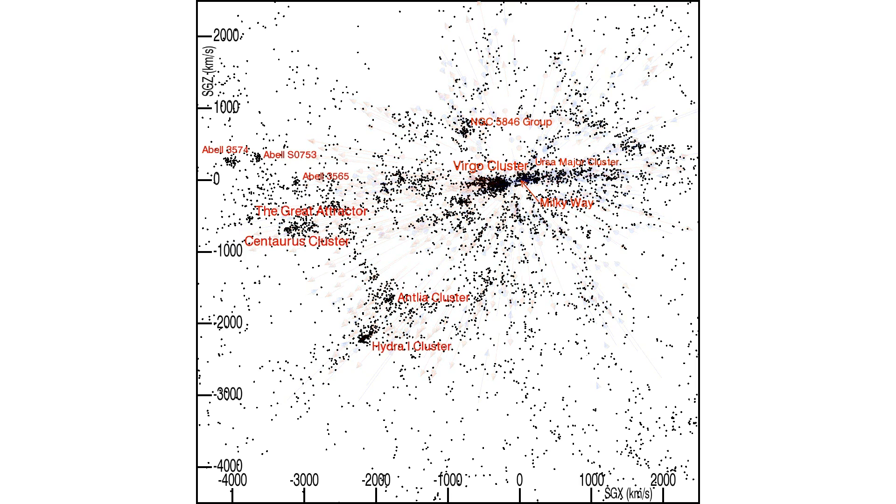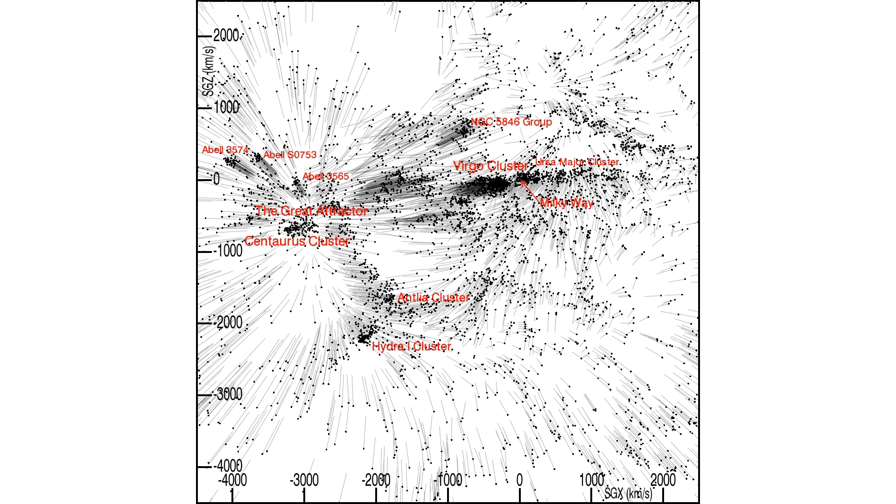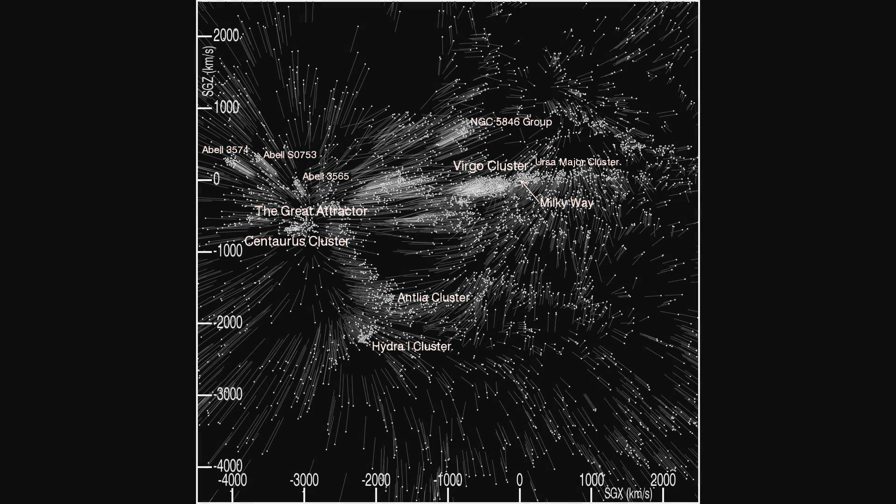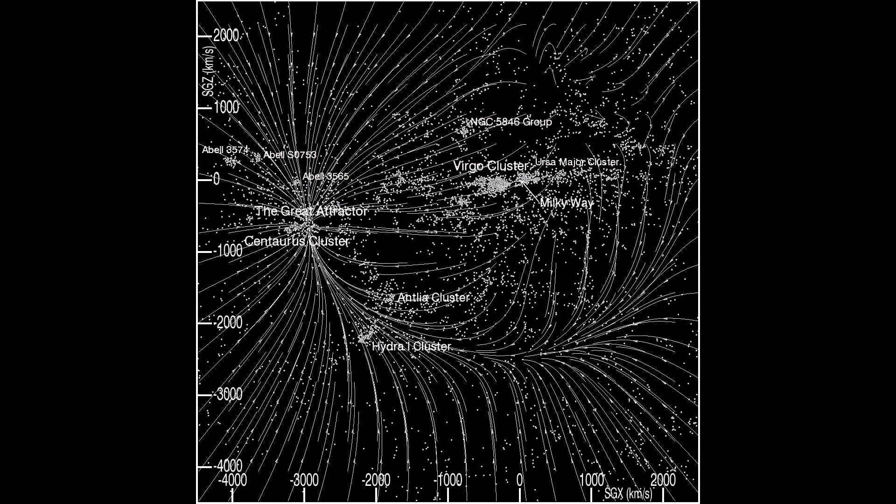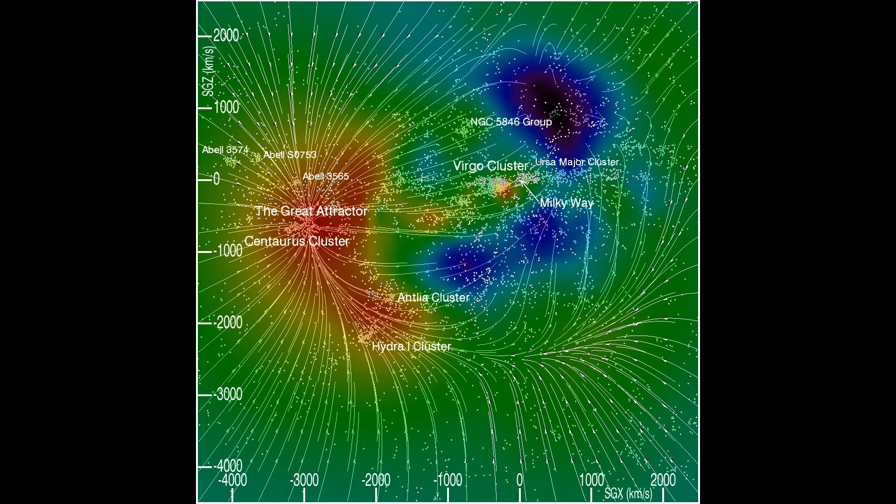We transition to the representation permitted by the Wiener filter model. With three-dimensional peculiar velocity tags given to all the galaxies in the red-shift catalogue. And then transition to the representation of flowlines and the underlying density field. Again, we see the importance of the region around the Centaurus cluster.